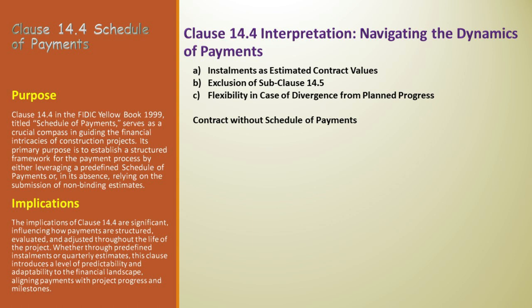Flexibility in case of divergence from planned progress. Project execution is often dynamic, and sometimes the actual progress doesn't align with the planned installments in the schedule of payments. Clause 14.4 accounts for this reality. If such a divergence occurs, the engineer, wielding the authority granted under Sub-Clause 3.5 (Determinations), can agree to or determine revised installments. This flexibility is crucial, allowing the payment structure to adapt to the project's actual pace, rather than being rigidly tied to a predefined schedule.